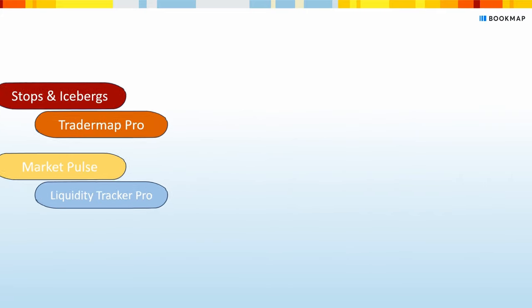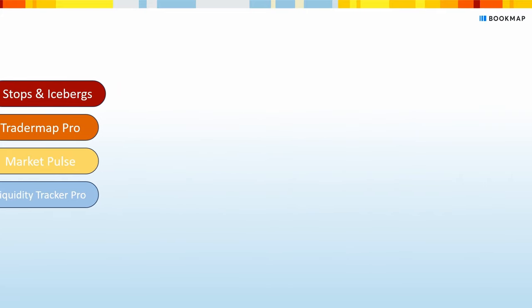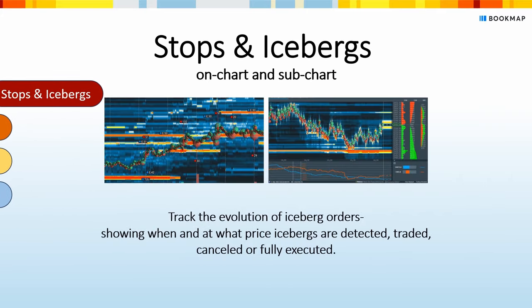The Stops and Icebergs on-chart and sub-chart add-ons are two of our most popular add-ons. They track the evolution of iceberg orders, showing precisely when and at what price icebergs are detected, traded, cancelled, or fully executed. You can get these two add-ons for $89 per month on the marketplace.